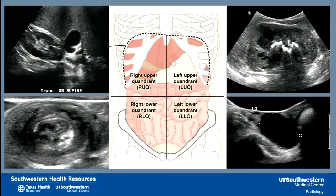When you separate the abdomen into quadrants, in the right upper quadrant we evaluate the gallbladder, the common bile duct, the right kidney, and the liver. Entities such as cholelithiasis, acute cholecystitis, and hydronephrosis are the focus here.